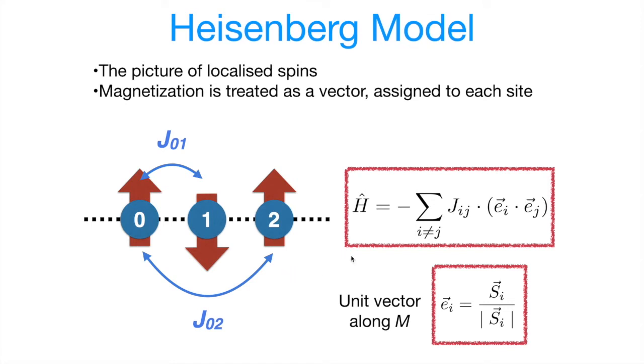So this is how the model is written. We have a sum over all possible bonds. We have a scalar product between the vectors representing our spins. These vectors are normalized to unity. And in front of the scalar product, we have a coupling constant, JIJ. So depending on the sign of the JIJ, the spins are coupled either ferromagnetically, if the JIJ is positive, or antiferromagnetically, if the JIJ is negative.